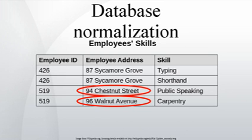A basic objective of the first normal form defined by Edgar Frank Ted Codd in 1970 was to permit data to be queried and manipulated using a universal data sublanguage grounded in first-order logic. SQL is an example of such a data sublanguage, albeit one that Codd regarded as seriously flawed. The objectives of normalization beyond 1NF were stated as follows by Codd.